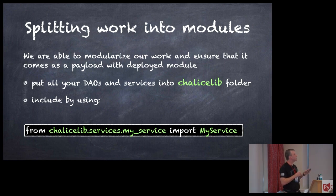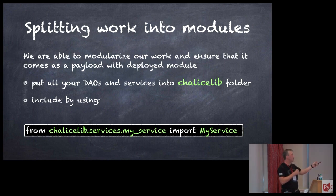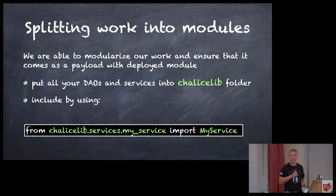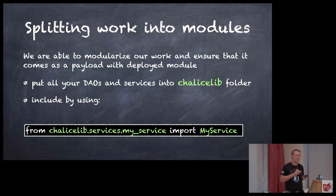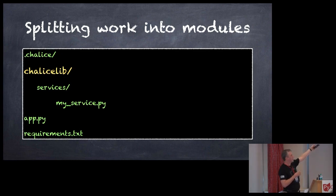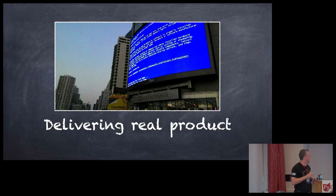Splitting work into modules: this is where the chalicelib folder comes in. You literally create a specific folder called chalicelib inside your app. Then you just import chalicelib dot whatever-your-folder dot whatever-your-module, import the class name. It will literally take everything in that folder and carry it with you. I actually put SQL files in there so my extensive queries were just dropped in there and carried along. It really packages that folder — so you have your .chalice and then you manually add chalicelib and put your stuff in there.